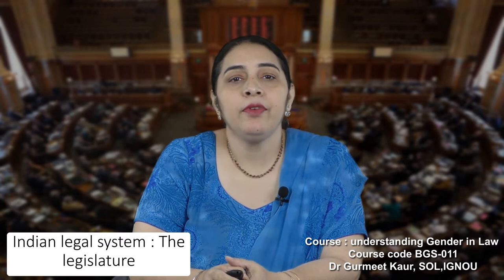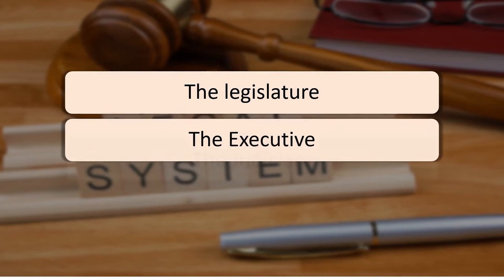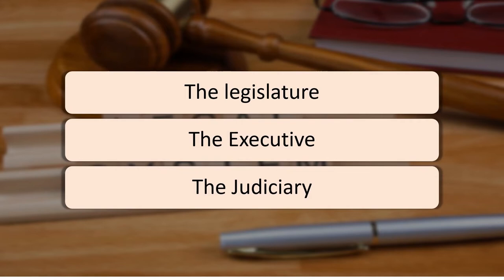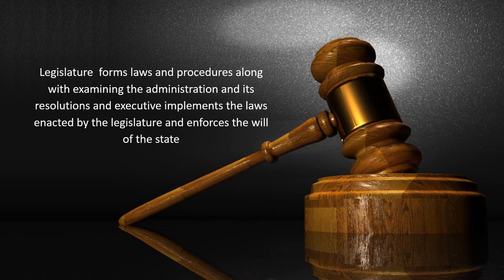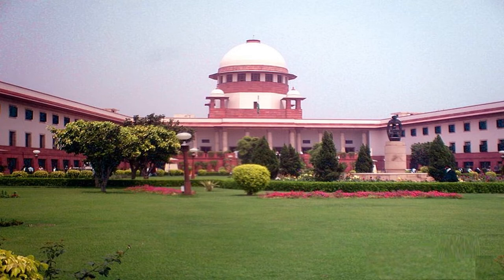The organs of government in the Indian legal system are divided into three branches: the legislature, the executive, and the judiciary. The legislature forms laws and procedures along with examining administration and its resolutions. The executive implements laws enacted by the legislature and enforces the will of the state. The judiciary interprets the law, settles disputes, and administers justice to all citizens.